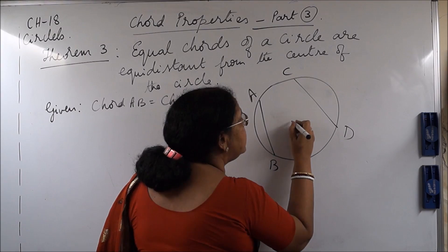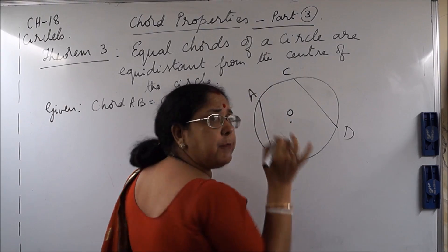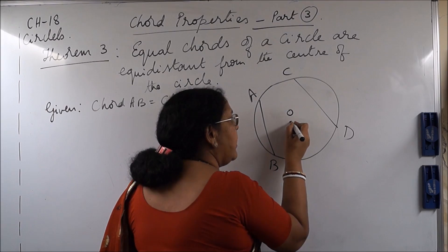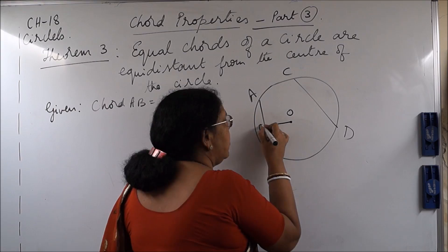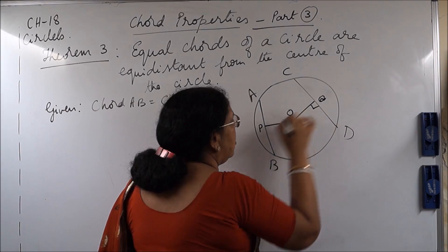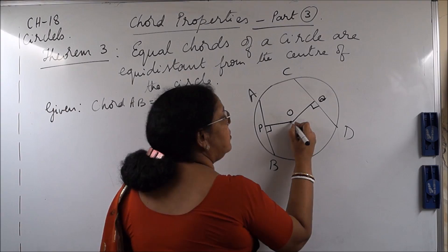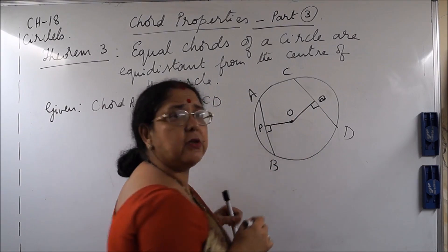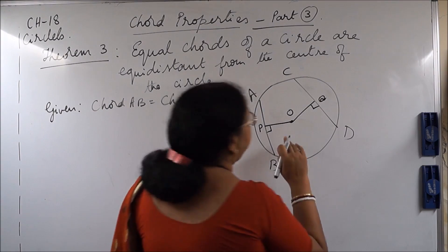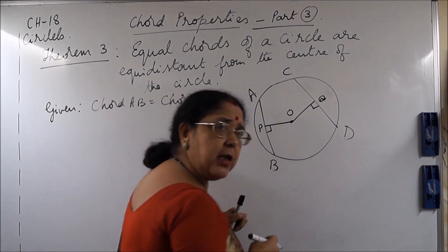Let me draw it properly. Suppose this is the center O. Perpendicular distance means we have to draw perpendiculars. So let us draw from O a perpendicular on chord AB — say OP — and let us draw a perpendicular OQ on chord CD. According to this theorem, OP will be equal to OQ. So let us verify whether they are equal. What we need to prove is OP is equal to OQ.